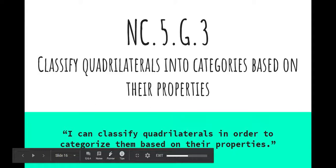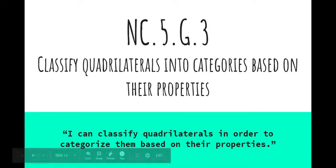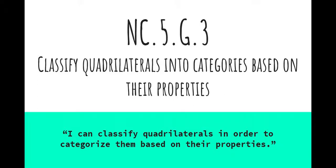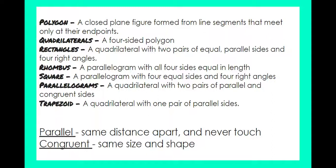All right, how's it going everyone? Thanks for watching this video. This video is looking at a fifth grade lesson on classifying quadrilaterals based on their properties. Here we see NC5G3, which is a North Carolina common core standard for classifying quadrilaterals into categories based on their properties. You can also see an I-can statement at the bottom. Feel free to go back and watch previous videos or pause this video at any time to jot down information.